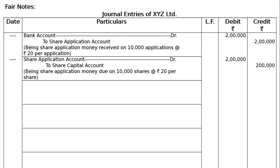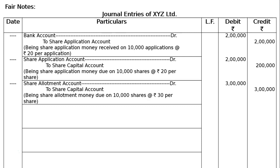This entry is the allotment — the third entry. The sequence is: application received, then due; allotment, first call, second call — first due, then receive. Next entry: Share Allotment Account debited to Share Capital Account. Narration: being share allotment money due on 10,000 shares at the rate of Rs.30 per share — Rs.3,00,000.